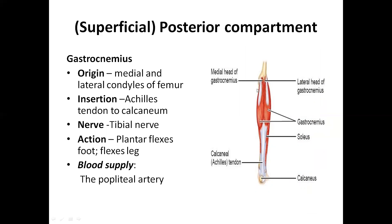There are two heads, both condylar. When we insert the tendon it is called the Achilles tendon. It is supplied by the tibial nerve, and blood supply is from the popliteal arteries.